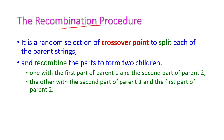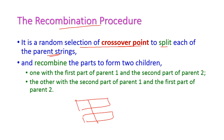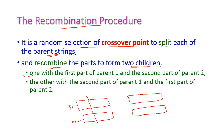The recombination procedure involves randomly selecting a crossover point to split each parent string. Given parent P1 and parent P2, we recombine the parts to form new children. Child one takes the first part of parent 1 and the second part of parent 2. Child two takes the second part of parent 1 and the first part of parent 2.